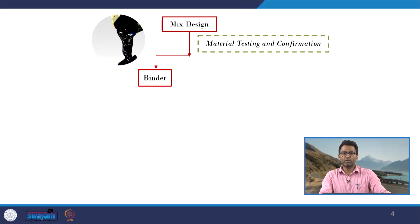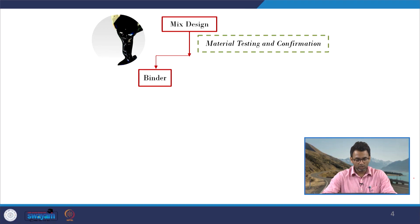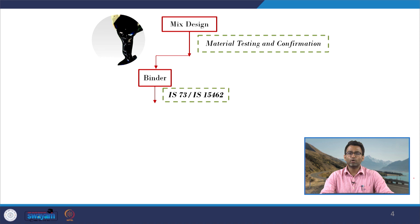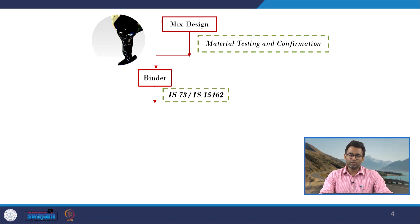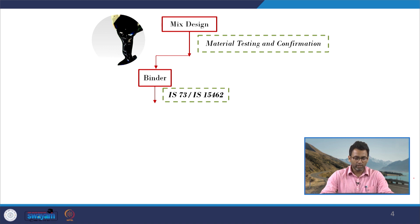Coming to the first step in the mix design process, it involves material testing and confirmation. We have two different materials using which a bituminous mixture is prepared: the bitumen or binder, and the aggregates. Once we get the binder to be used in the mix design process, we subject it to a series of testing. In Indian specification, we follow IS 73 for unmodified or conventional viscosity graded bitumen, or IS 15462 for polymer modified binders. If it is a Superpave mix design method, we perform the rheological test and PG grading, which we have already completed previously.